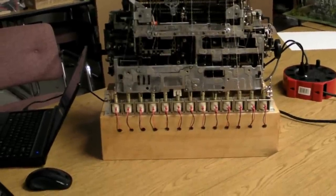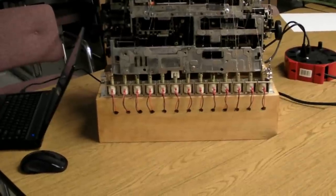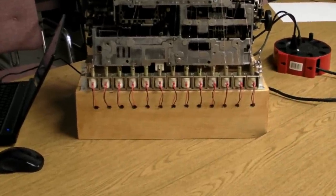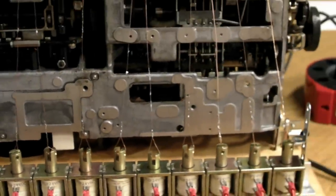So all the electronics now, which I showed in a previous video, are underneath in that box. And all you can see is the solenoids here, of which there are 14.